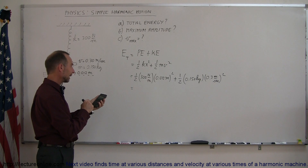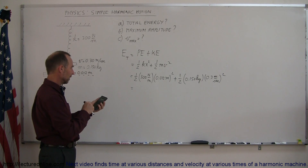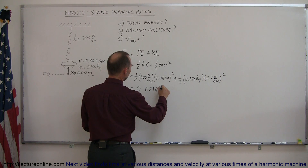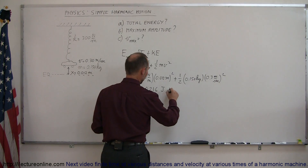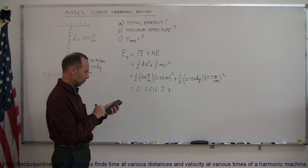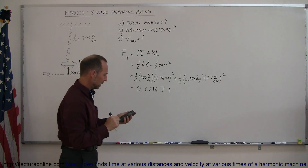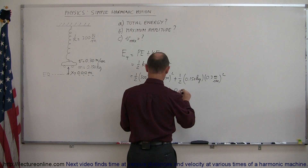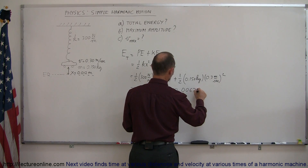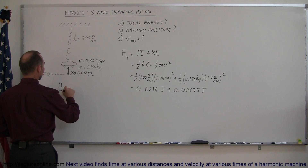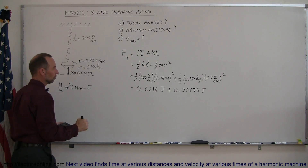Starting with potential energy: 300 times 0.5 times 0.012 squared equals 0.0216 joules. For the units, we have newtons per meter times meters squared — one meter cancels with the per meter — giving newton-meters, which by definition is joules. So the units check out for potential energy.